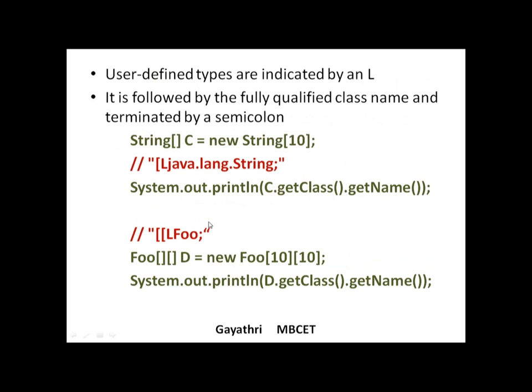Another example: String[] c = new String[10]. It is a single-dimensional array. 'L' stands for user-defined types — strings are user-defined types in Java — followed by the class name java.lang.String. Similarly, for a double-dimensional array like D[][], it shows two square brackets, 'L' for user-defined type, followed by the class name 'Foo'.